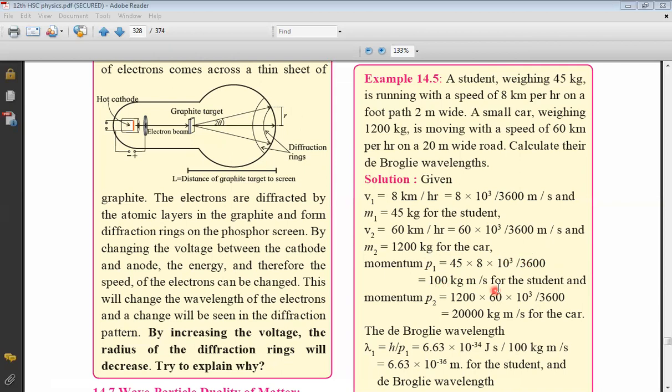So when you multiply it, you will get 100 kg meter per second as the momentum of the student. Momentum of the car, again M2V2, 1200 kg into 60 into 1000 by 3600 meter per second, which is 20,000 kg meter per second.